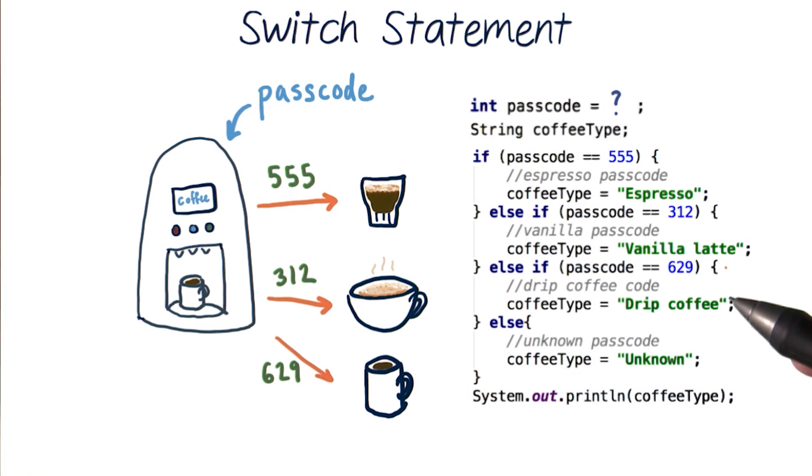But this type of code can get really long for multiple passcode checks. And we're doing a similar check for equality in each of these test conditions. We're saying passcode equals equals some specific value. And Java gives us another way to write this code with a switch statement.